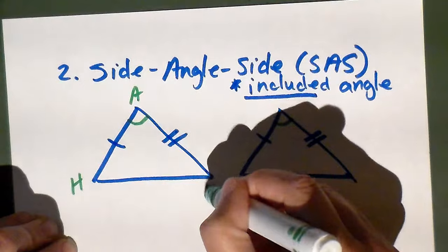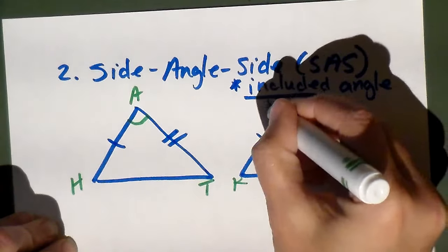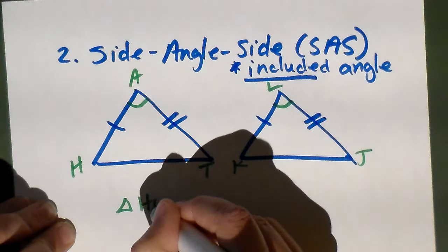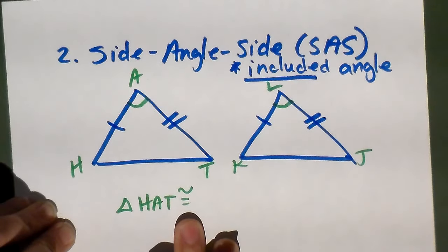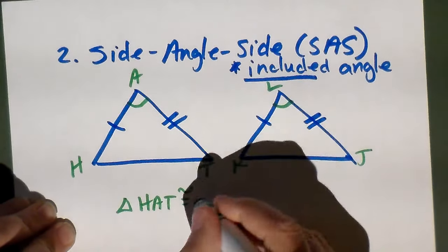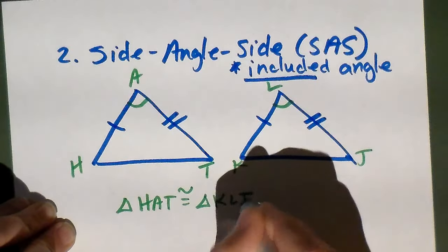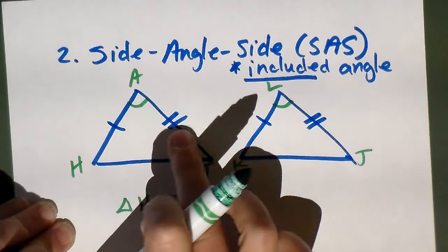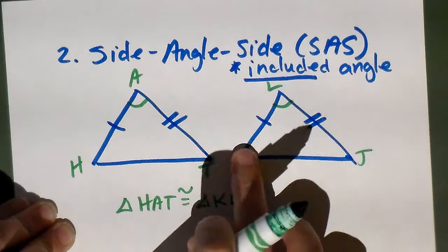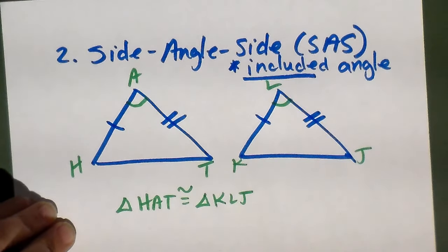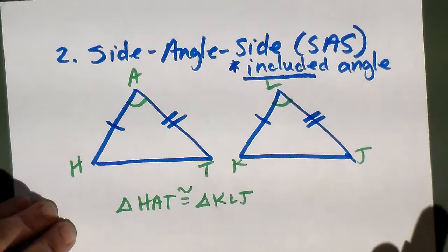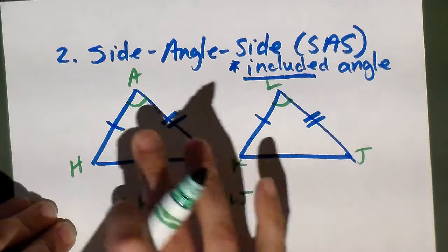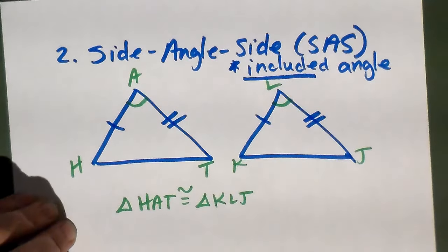When naming the triangles, remember your congruence statement has to be in sequence. If I name the first triangle HAT, congruent to KLJ, I went from one tick mark to the angle to two tick marks, so I have to do the same for the second triangle. Angle A touches both sides, and angle L touches both sides — that's what makes it the included angle.